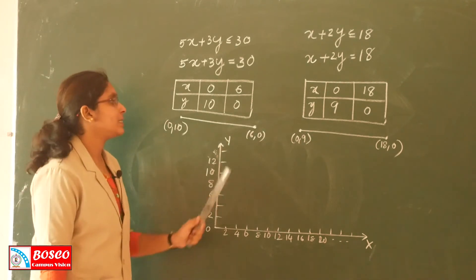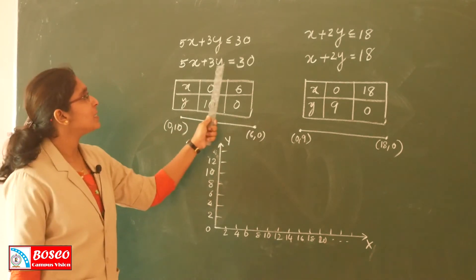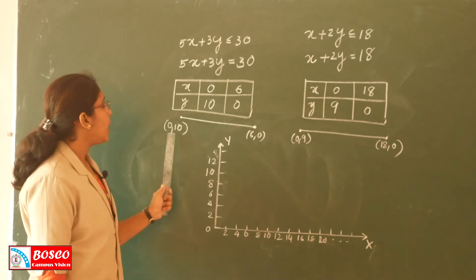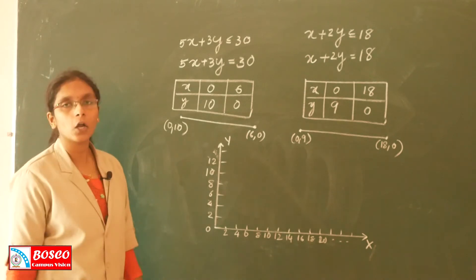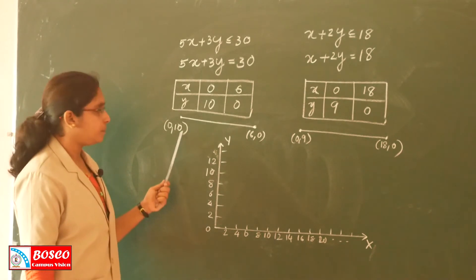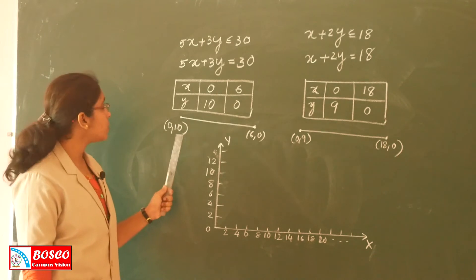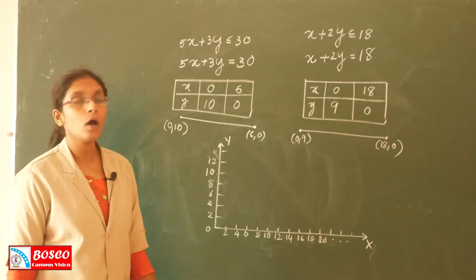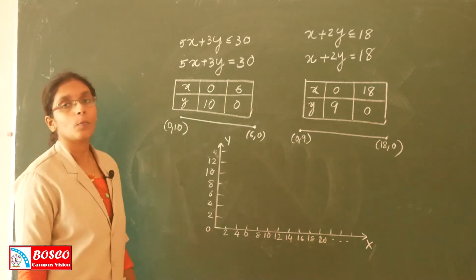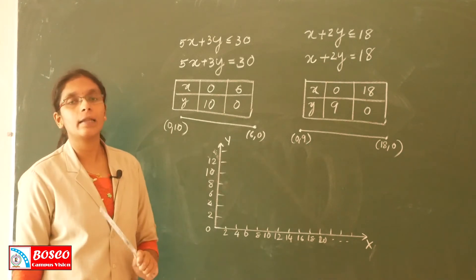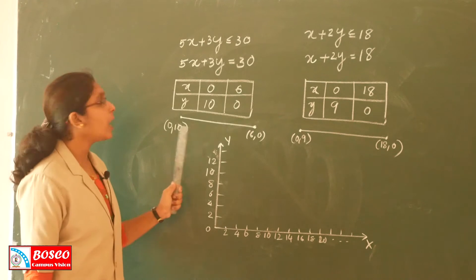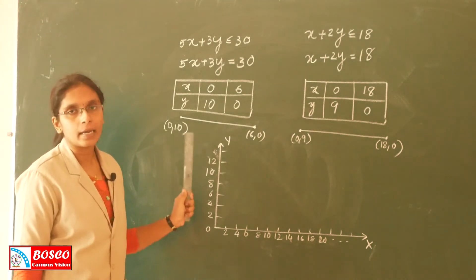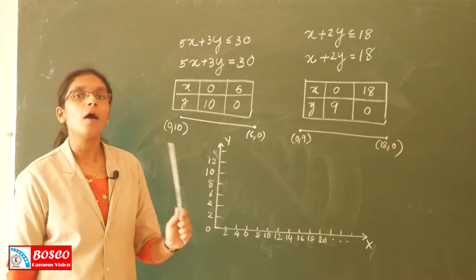The first line segment represents 5X plus 3Y equals 30. The initial point: when X equals 0, we find the Y-intercept. Y-axis gives us the Y-coordinate. The Y-axis value is 10, so the initial point is 0, 10.